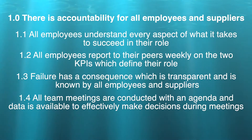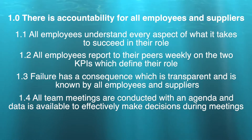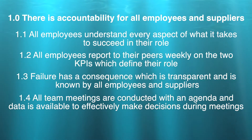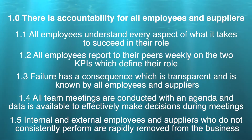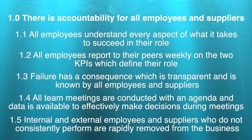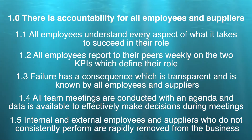1.3 Failure has a consequence which is transparent and is known by all employees and suppliers. 1.4 All team meetings are conducted with an agenda and data is available to effectively make decisions during meetings. 1.5 Internal and external employees and suppliers who do not consistently perform are rapidly removed from the business.